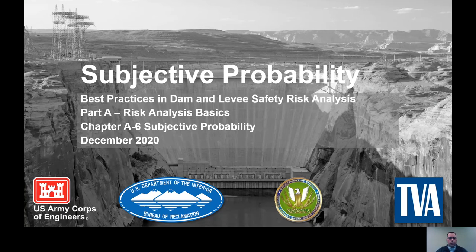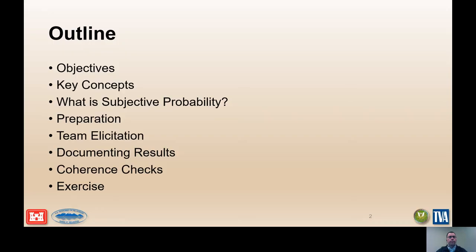This is the presentation for Chapter A6, Subjective Probability. The outline of the presentation includes objectives of this chapter, key concepts, what is subjective probability, preparation, team elicitation, documenting results, coherence checks, and lastly we'll have an exercise.